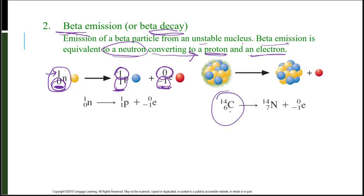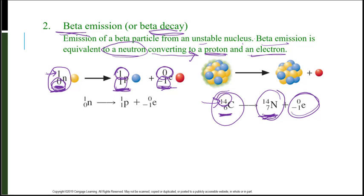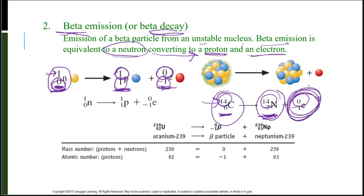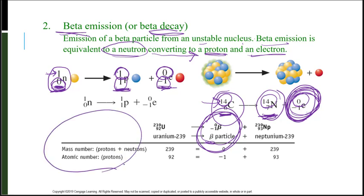Here is an example of carbon-14 decaying to nitrogen-14. We can see that going from 6 to 7, my neutron converting to a proton and an electron — it converted to a proton, so six plus one is seven. And there's my electron. Notice that my mass — I had 14 on the left and I have 14 plus zero is 14 on the right. I can write that as zero over negative one with an E or as a beta particle — zero over negative one beta emission. My mass number and the atomic number both balance on both sides.